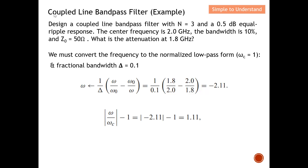This is the example I want to work through — it is taken from Pozar, and I have added more detail in working up the solution. The problem: design a coupled-line bandpass filter with n = 3 and a 0.5 dB equal-ripple response. The center frequency is 2 GHz, the bandwidth is 10%, and the characteristic impedance is 50 Ω. We also need to find the attenuation at 1.8 GHz.